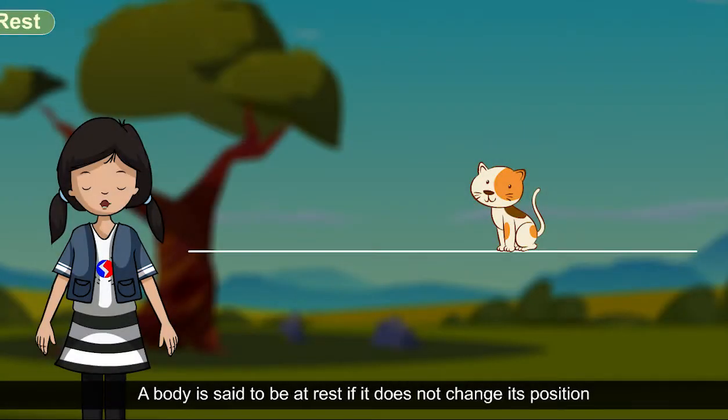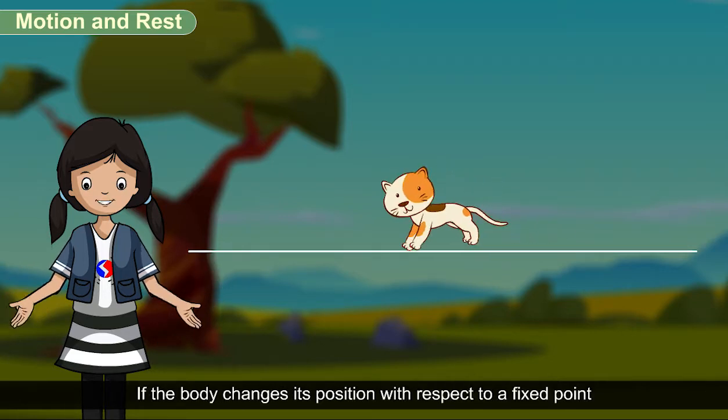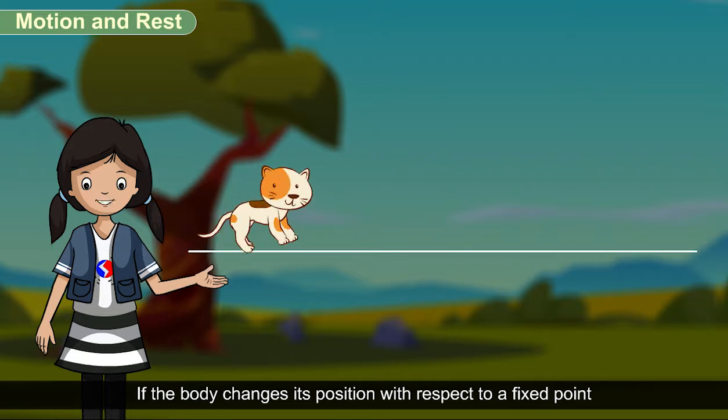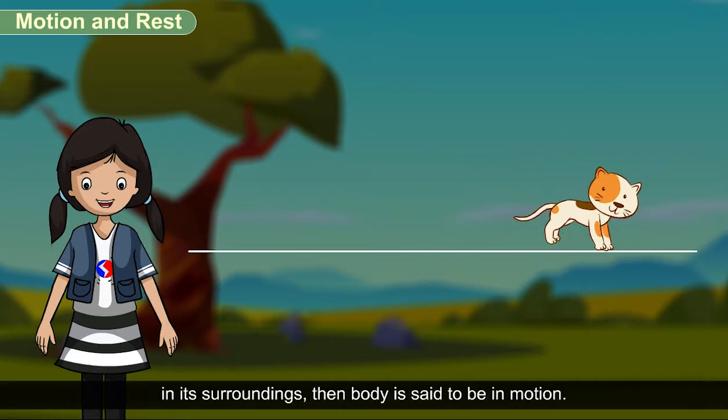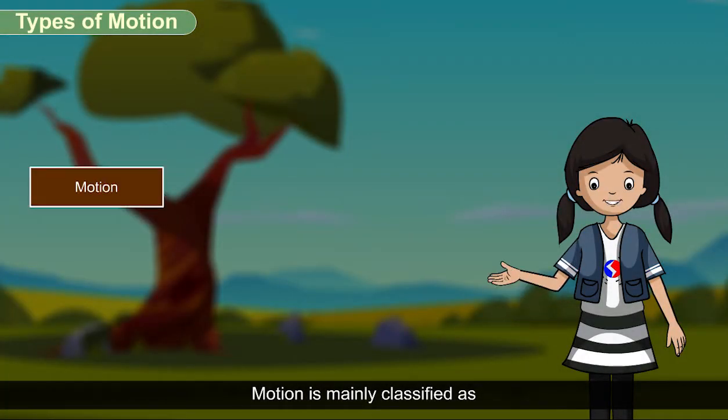Types of Motion. A body is said to be at rest if it does not change its position with respect to a fixed point in its surroundings. If the body changes its position with respect to a fixed point in its surroundings, then the body is said to be in motion.